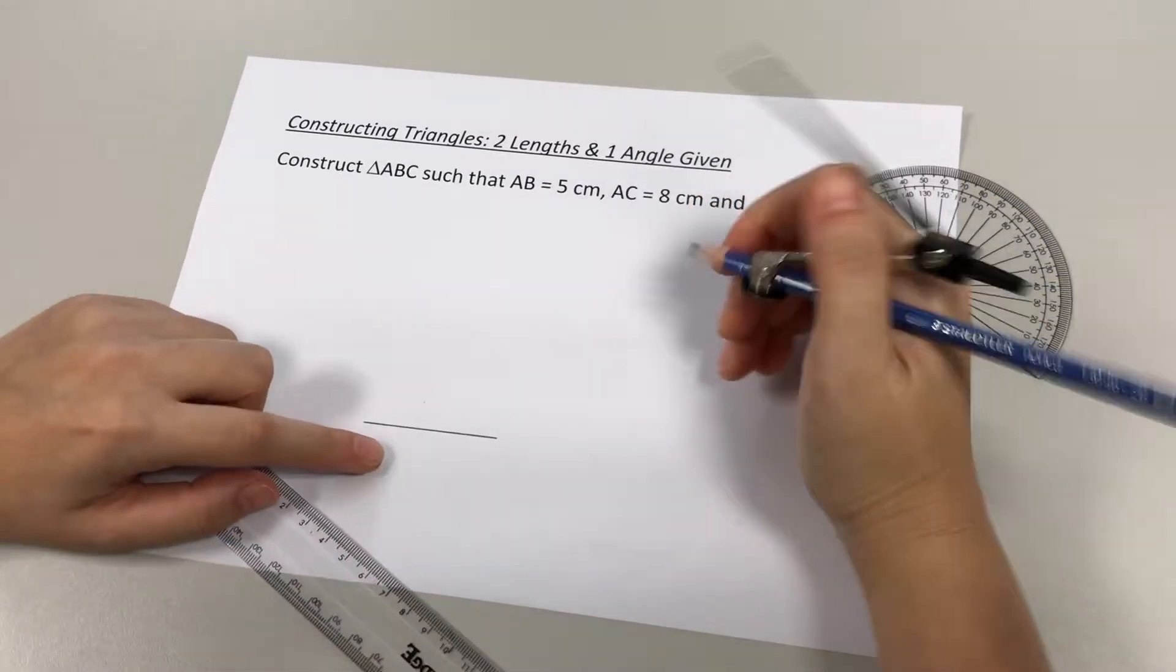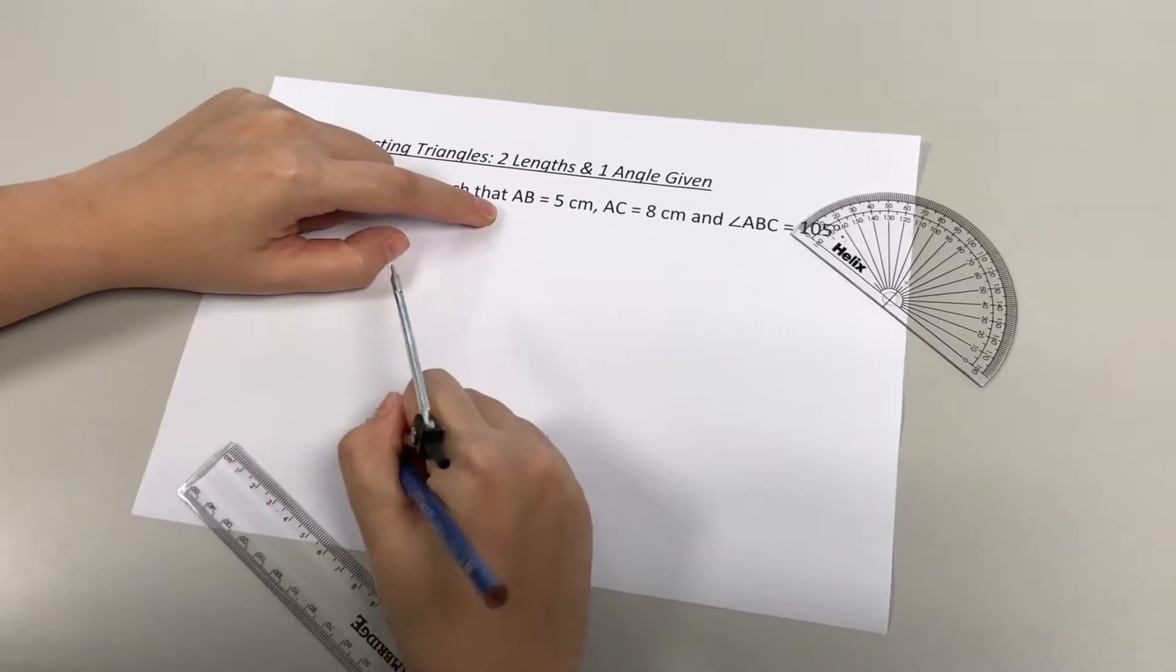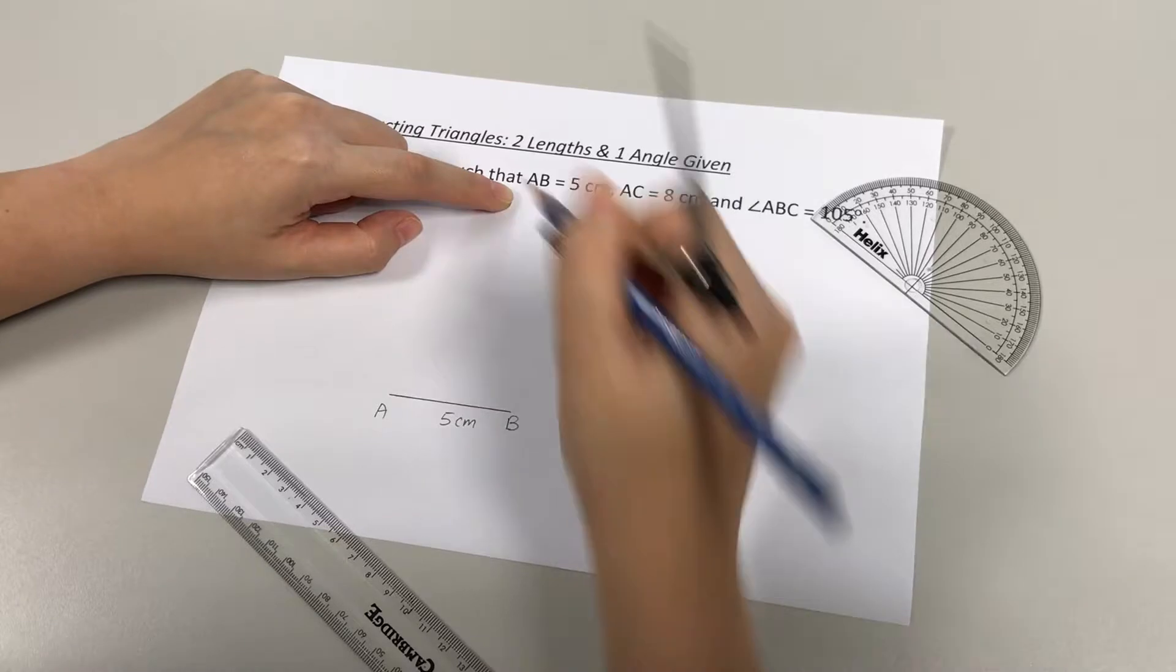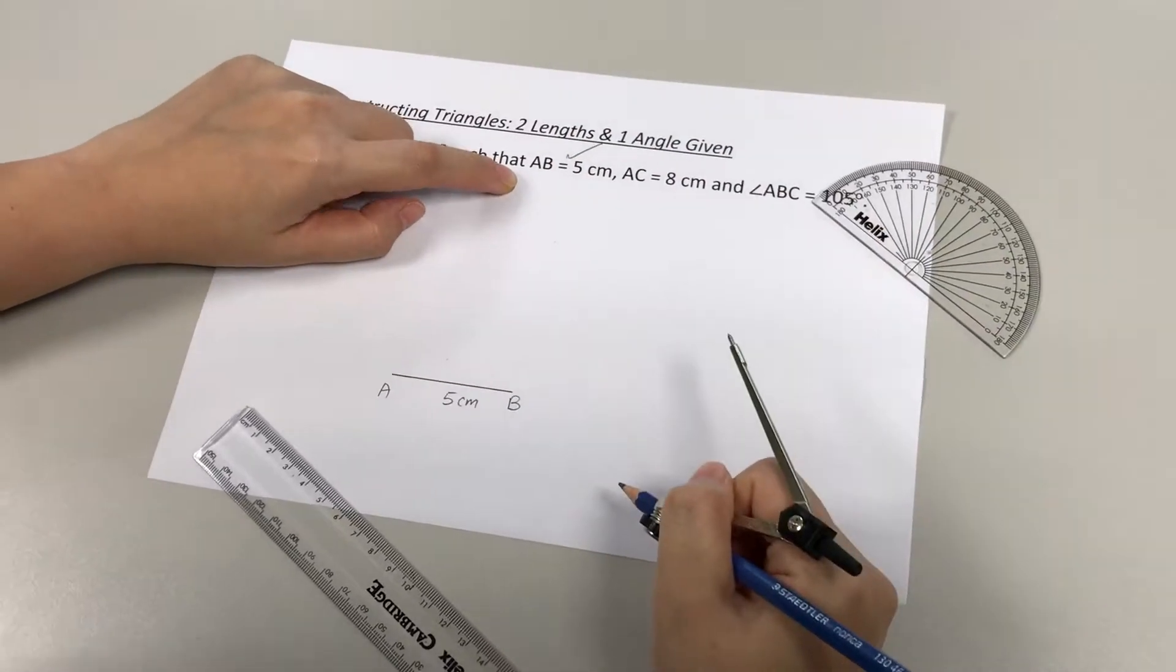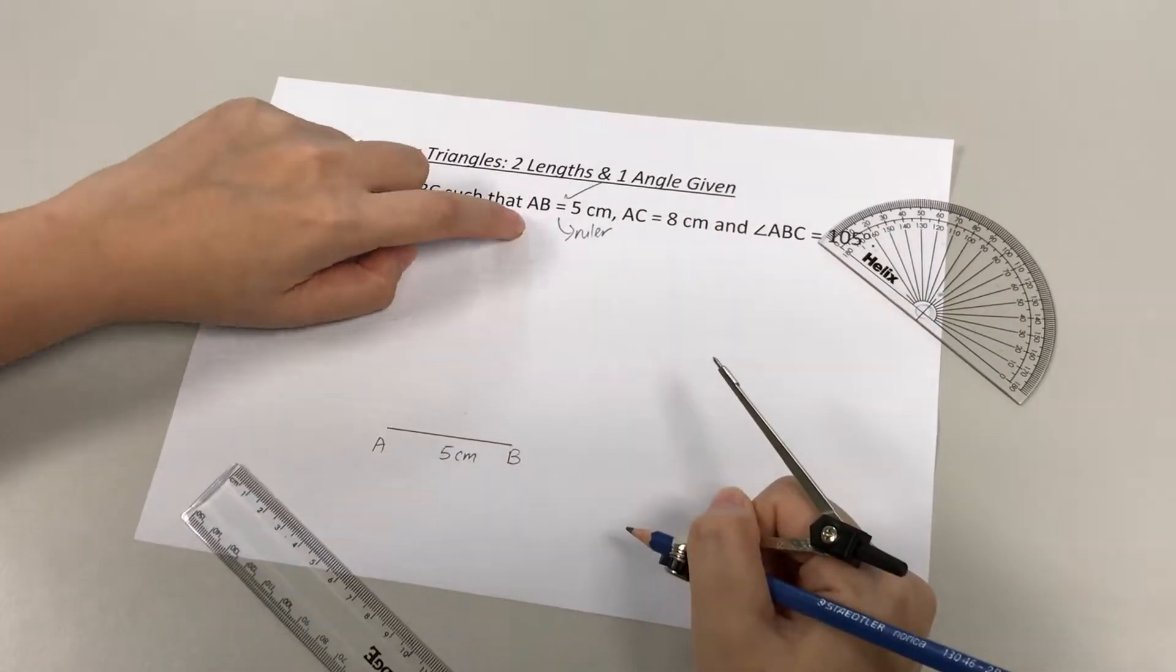That is how I start. I have my 5cm line. I'm going to label it AB 5cm. We are done with this. This was drawn using your ruler. That's always the first step.